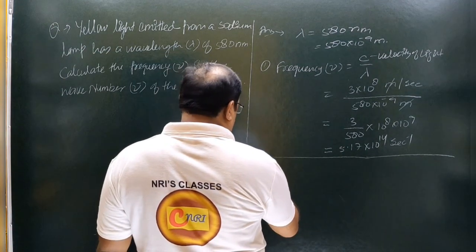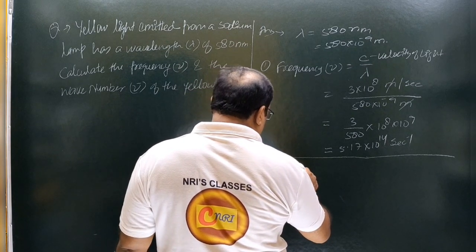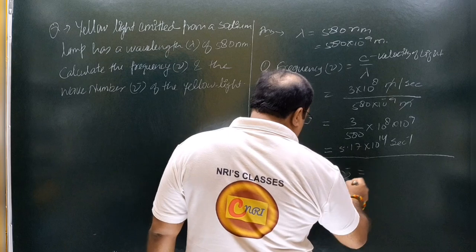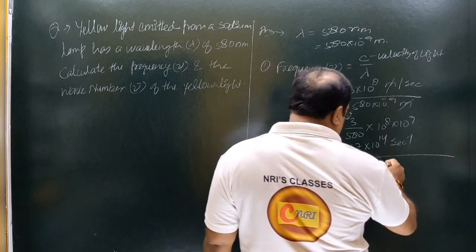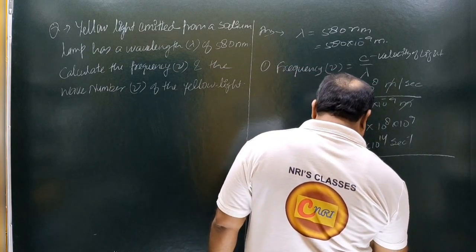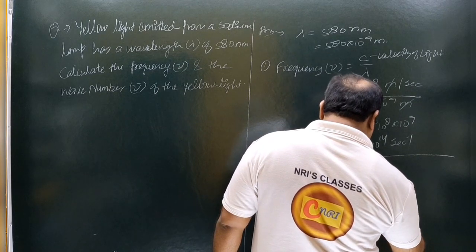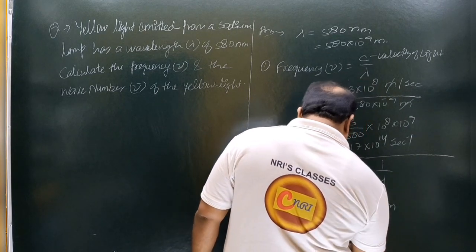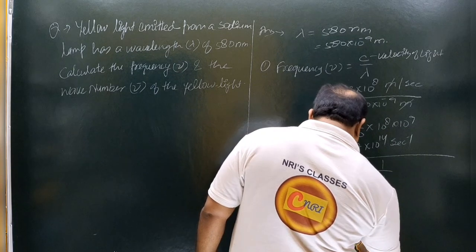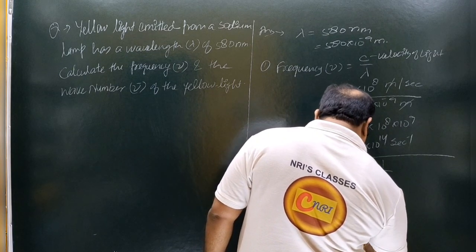Wave number solve करें — wave number ν̄ equal to 1 by lambda। तो यह हो जाएगा 1 by 580 into 10 to power minus 9 meter, यानि 10 to power 9 by 580 meter inverse।